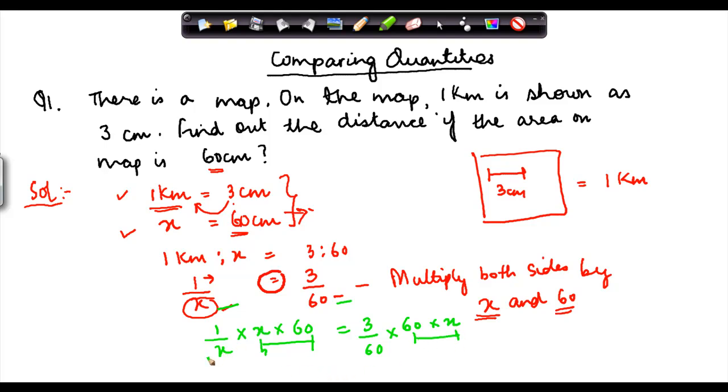Now x by x will get cancelled, right? So what am I left on the left hand side? I am just left with 60. Is equal to, now 60 would get cancelled with 60, and I am left here with 3 into x, which is 3x.